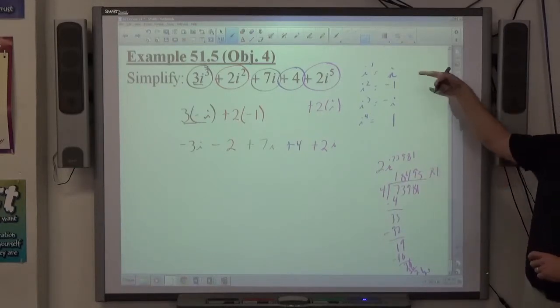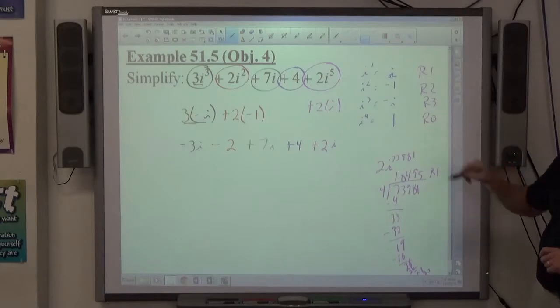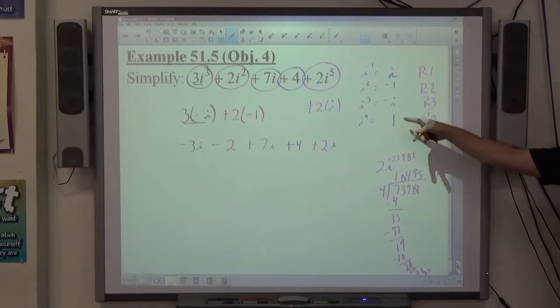Remainder 1, right? Remainder 1, remainder 2, remainder 3, remainder 0. The remainder matters. The quotient doesn't. So remainder 1, 2, 3, and 0 means you have 4th power.